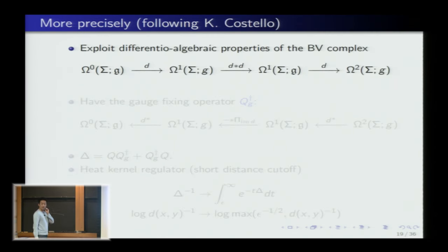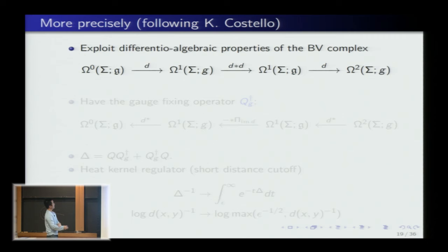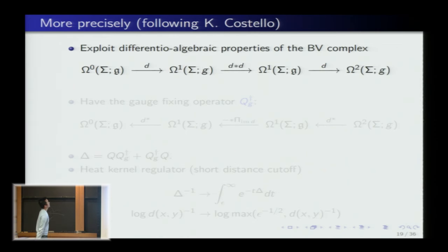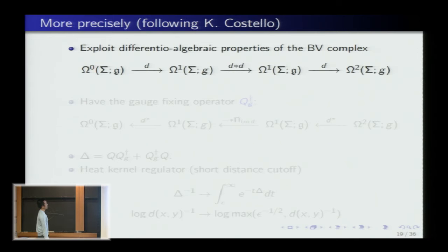To make this all precise, I use the BV formalism as formulated by Kevin Costello. In this formalism, you have a BV complex: the space of 1-forms (connections), ghosts, anti-fields, and anti-ghosts. The kinetic operators are: the Yang-Mills kinetic term, the operator D coming from the infinitesimal action of the gauge group, and its adjoint D* to close the complex. These are all Lie algebra-valued forms on the manifold. This is completely intrinsic to the theory — no choices made yet.